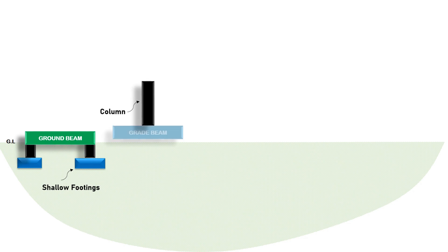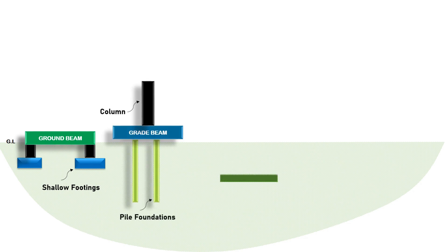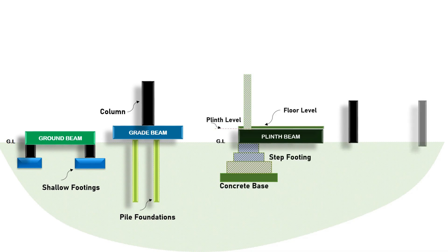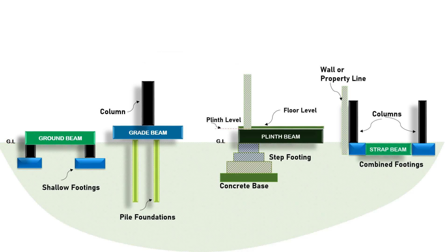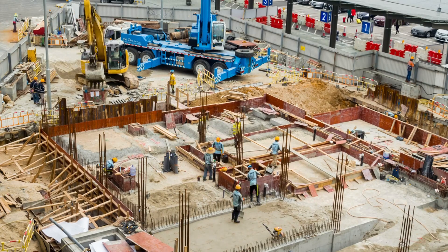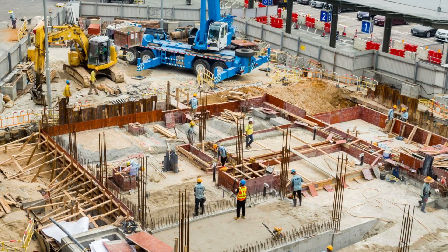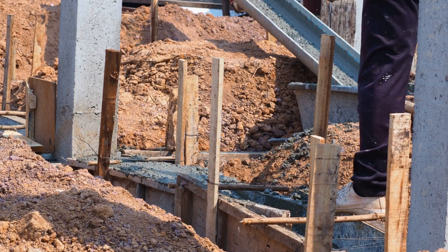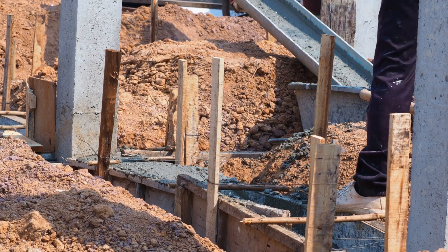To summarize: ground beams are supported by soil and connect shallow footings; grade beams span between piles and deep foundations; plinth beams are placed just above ground level to tie the structure together; strap beams handle eccentric loading between isolated footings; and cap beams distribute loads across grouped deep foundation elements like pile caps or caissons.